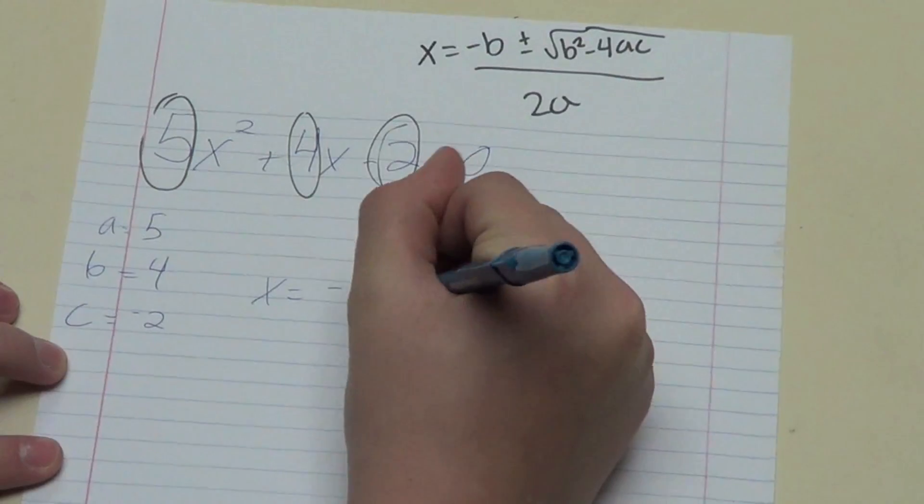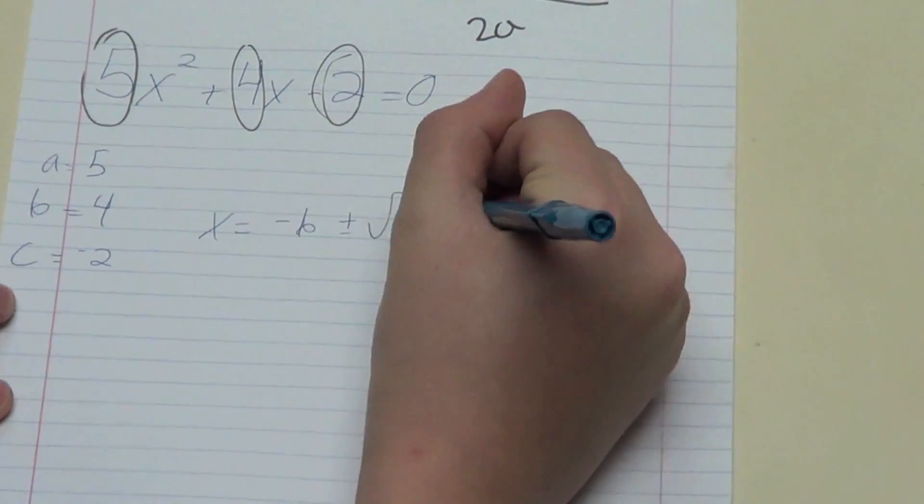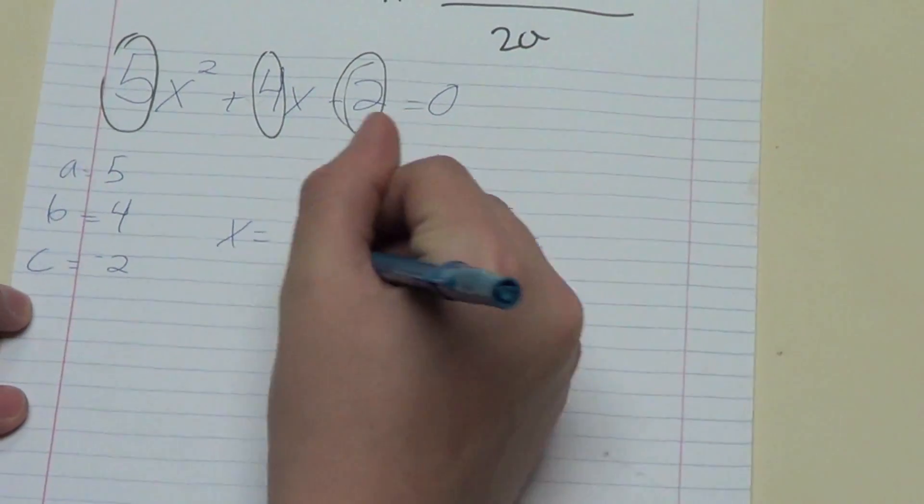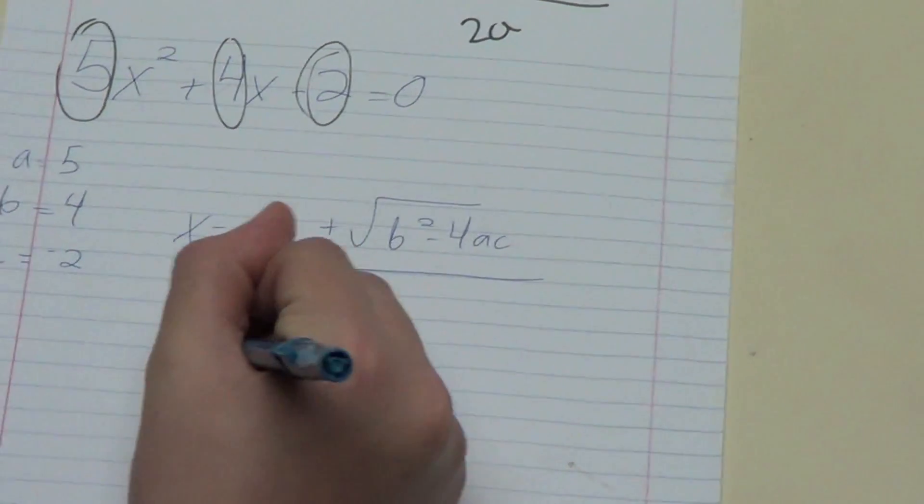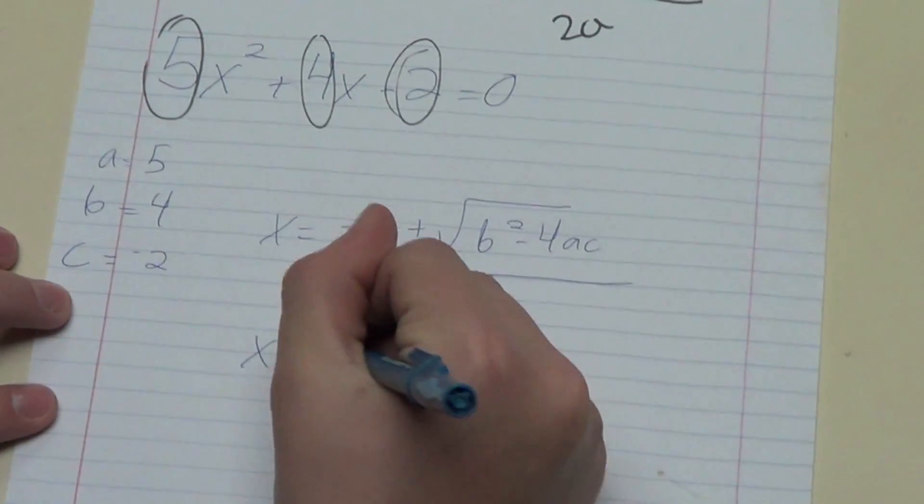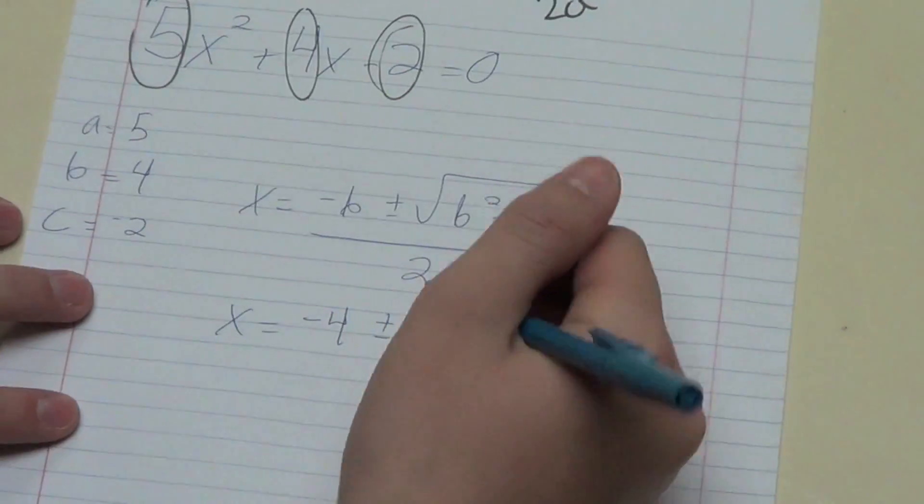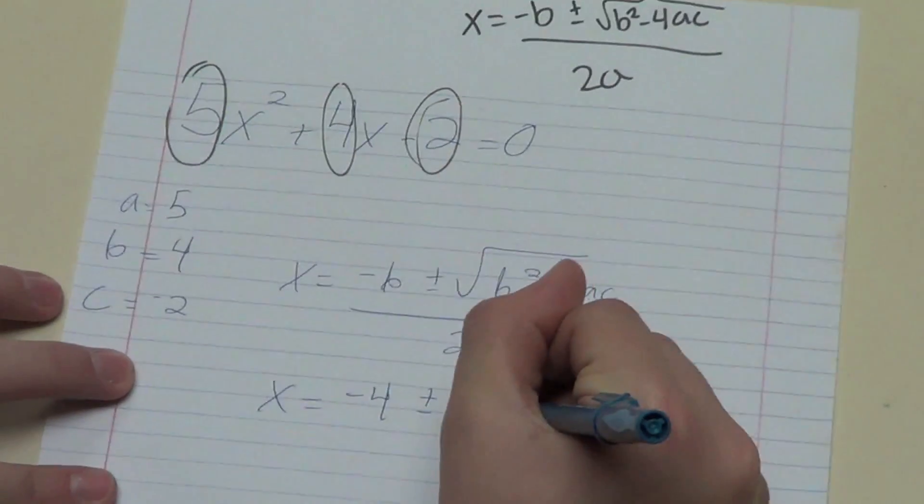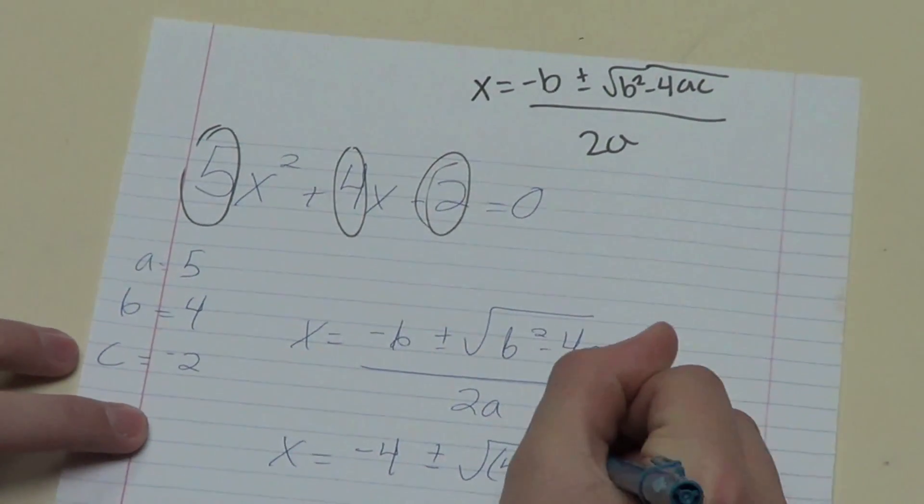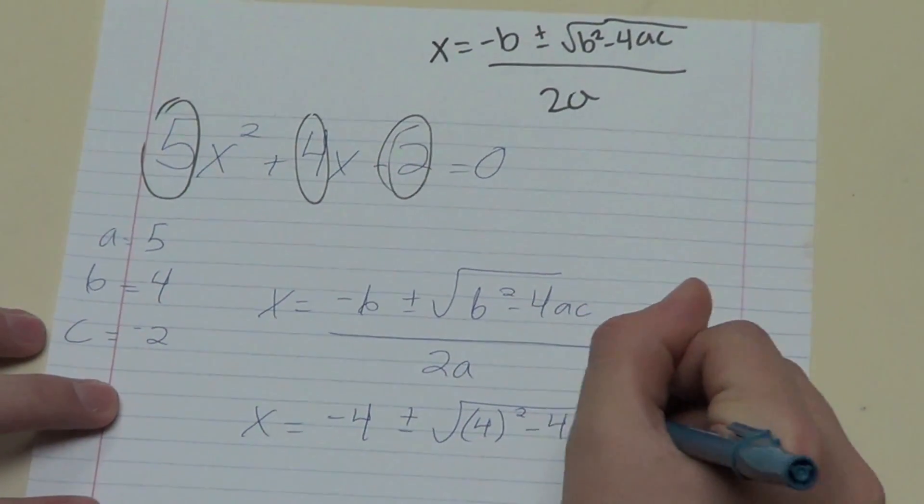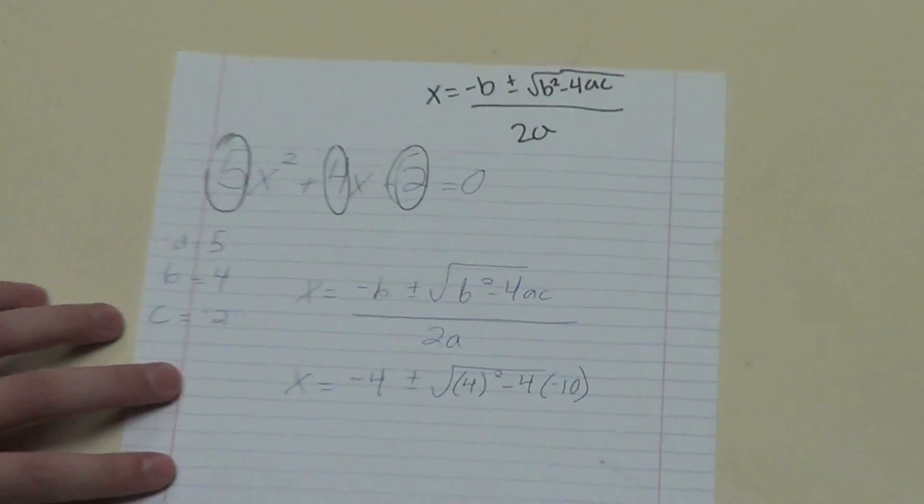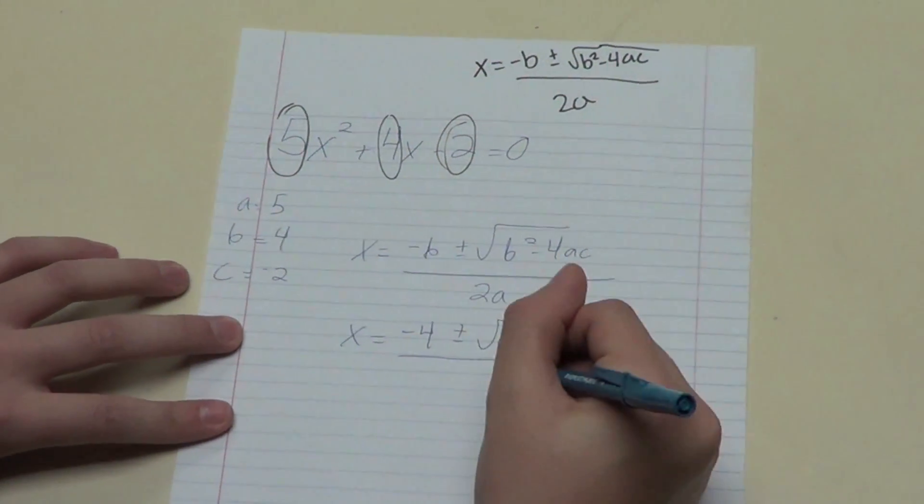Negative b plus or minus rad b squared minus 4ac all over 2a. X equals negative 4 plus or minus rad 4 squared minus 4 times negative 10? Yep, that's right. All over 10.